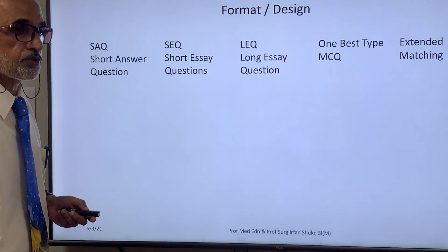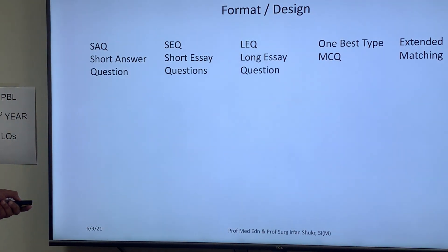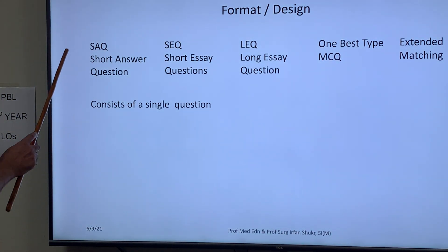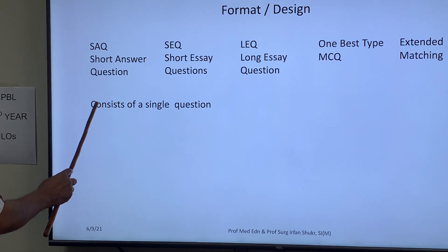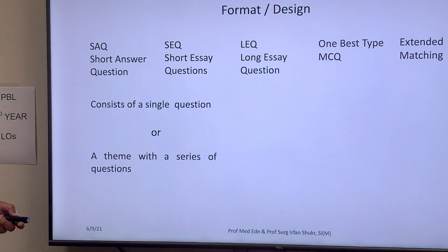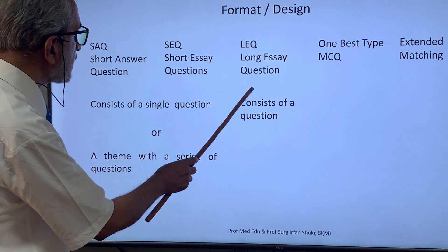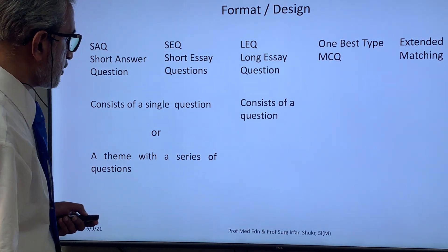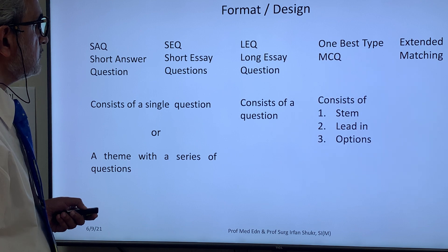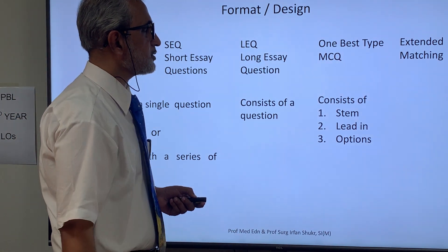These are the different types of written questions commonly used. Short answer and short essay questions consist of a single question or a theme with a series of questions. A long essay question consists of a broad question. A one-best MCQ consists of a stem, a lead-in, and options.